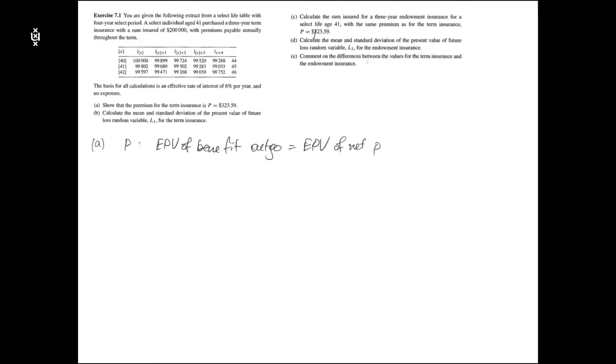Using the equivalence principle, the premium P should be set such that the expected present value of benefit outgo equals the expected present value of net premium income. The benefit outgo in this exercise is an insured sum paid by the insurance company to a policyholder in the case of death of the policyholder. Therefore, the expected present value of this benefit outgo can be modeled using actuarial notation as an insured sum S times the actuarial value of a 3-year term insurance.